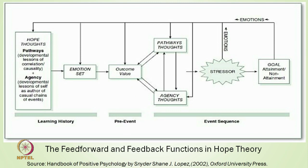Hope thoughts and agency thoughts interact with an emotion set — including stresses, anxiety, or supporting positive emotions — which can trigger movement in a positive or negative direction. Past experiences and learning history help define our current pathways and agency thoughts. As we move towards goals, emotional factors such as stress and anxiety may arise along with supporting emotions, until we finally achieve certain goals. Childhood experiences are very important in determining what level of hope we have.